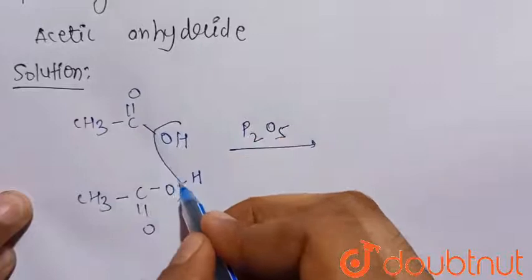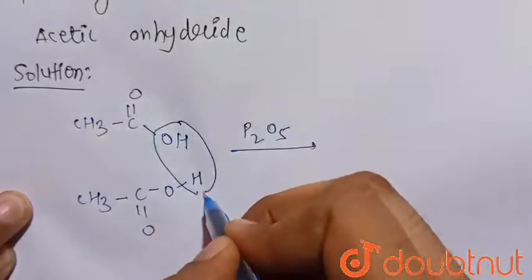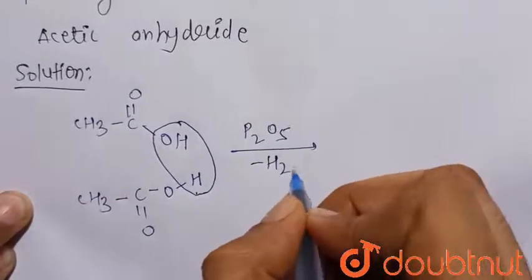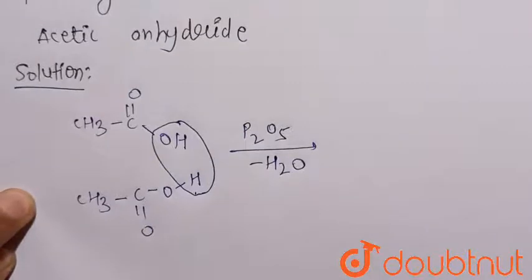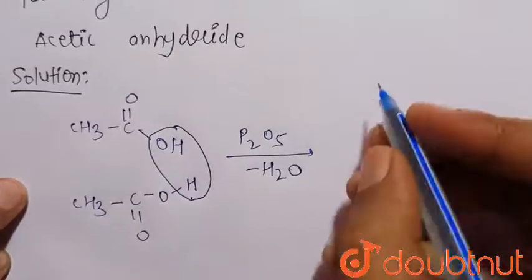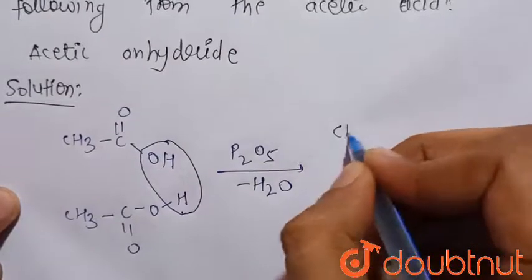there is the removal of one water molecule. As it is a dehydrating agent, it removes water from the two moles of ethanoic acid or acetic acid. So there is the formation of the acetic anhydride, that is